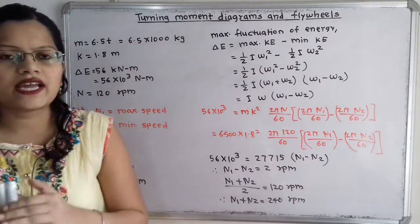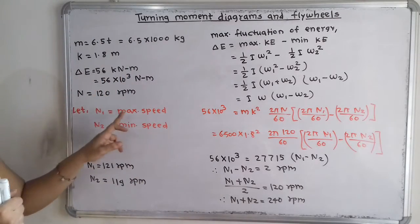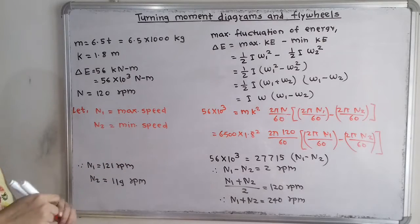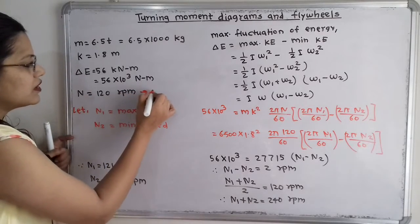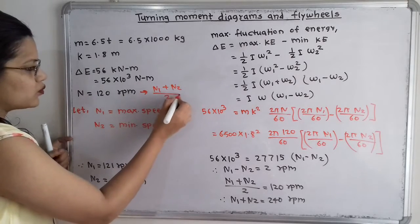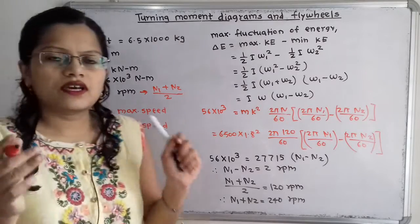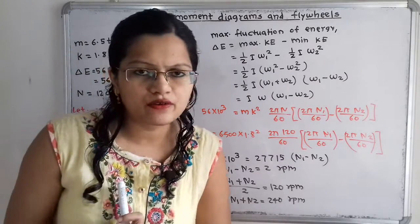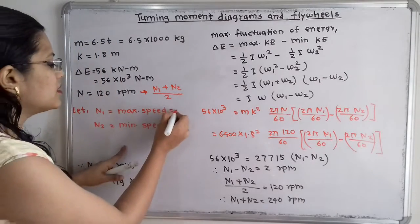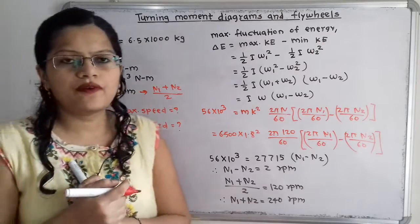So how do we consider this mean speed? We will consider N1 as the maximum speed and N2 as the minimum speed. Then we can write the mean speed as equal to N1 plus N2 divided by 2. The question is to calculate the maximum speed N1 and the minimum speed N2.